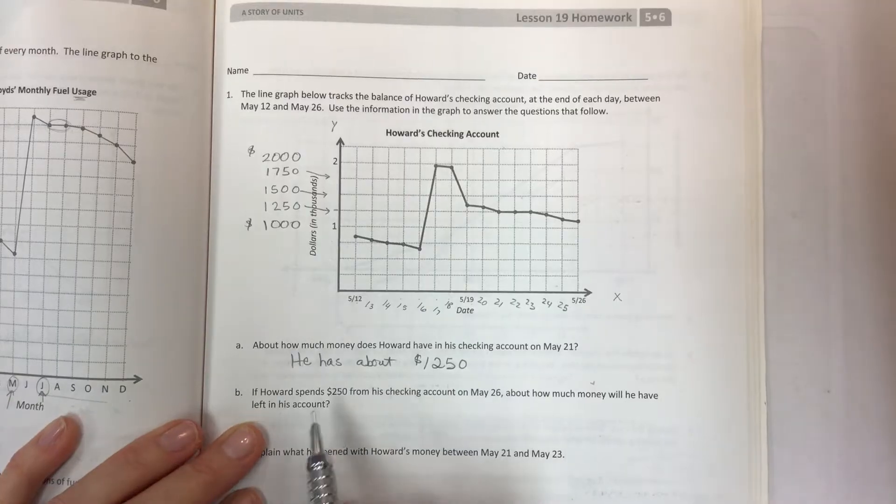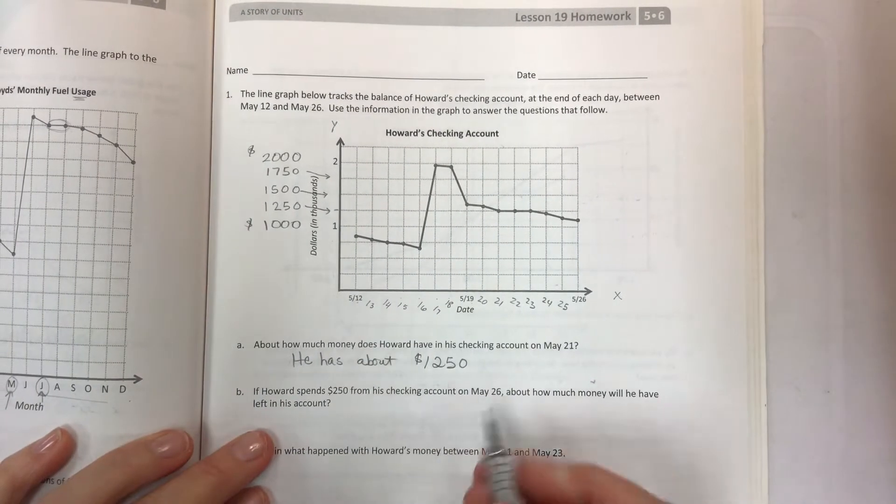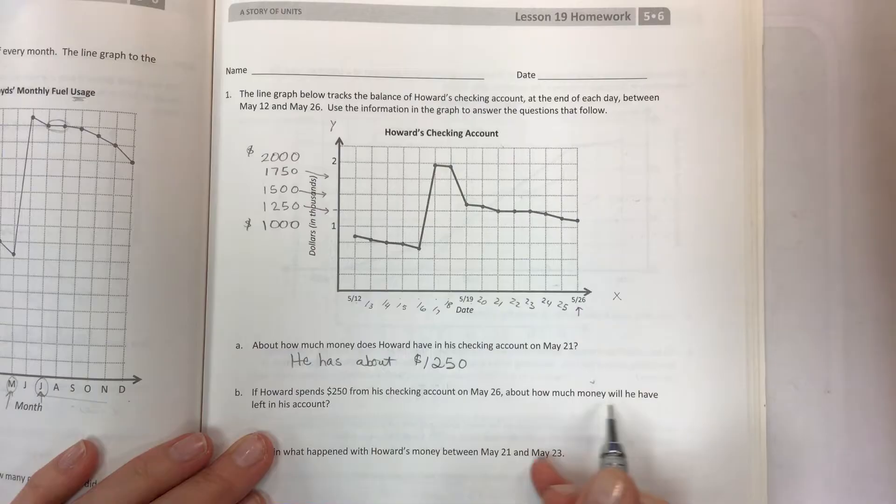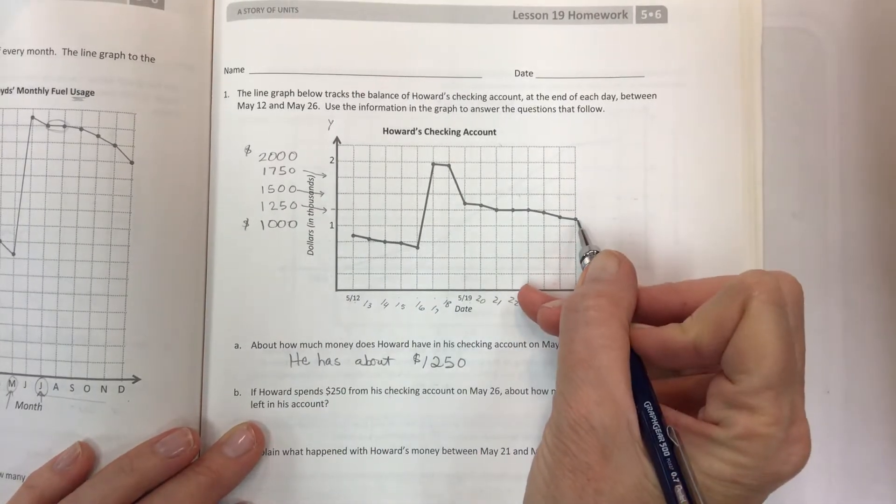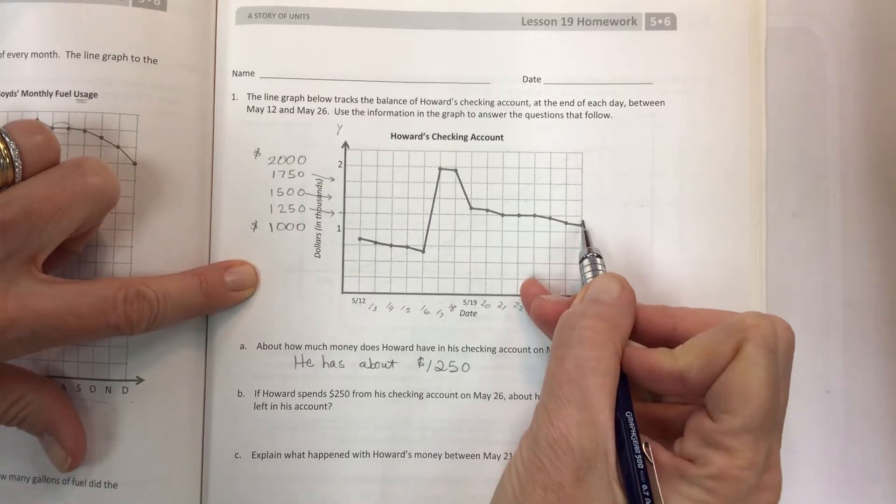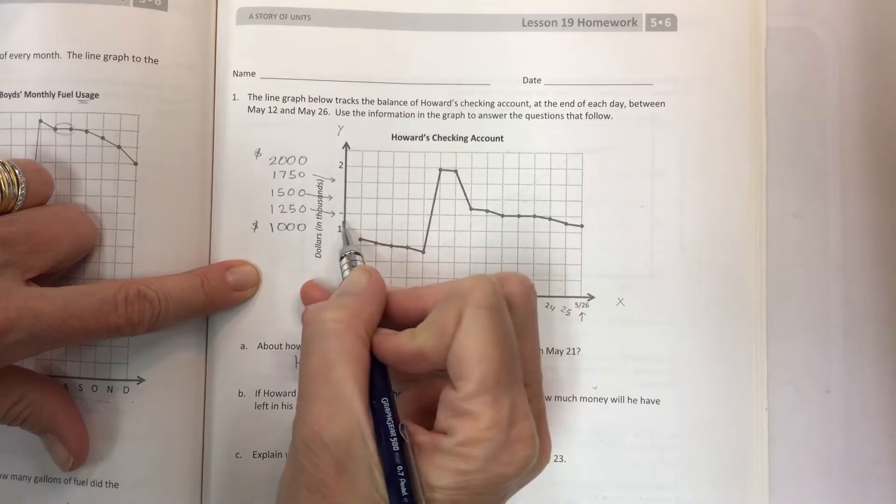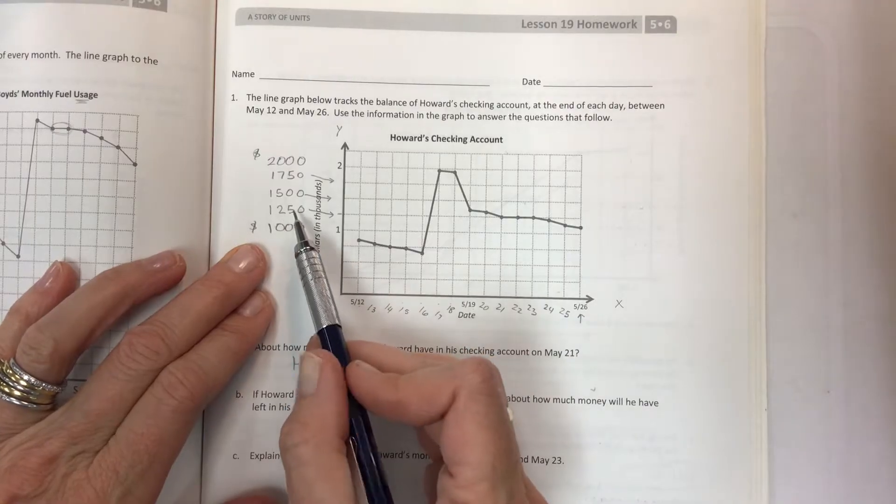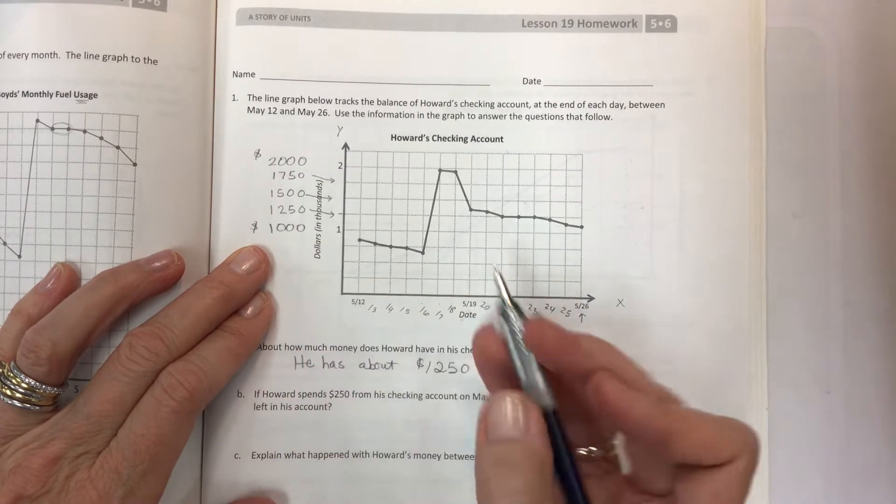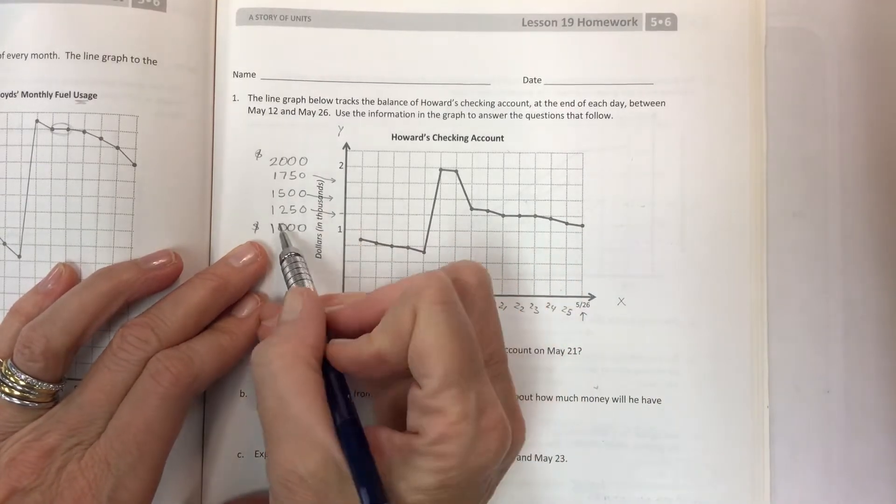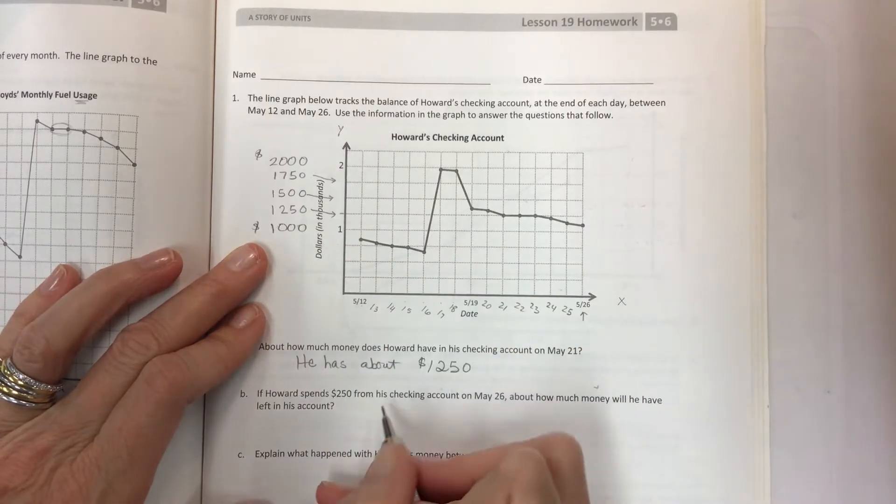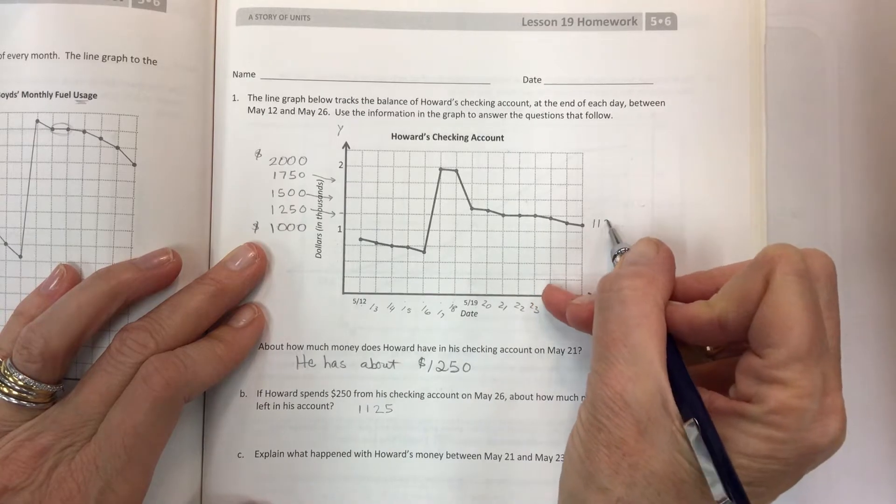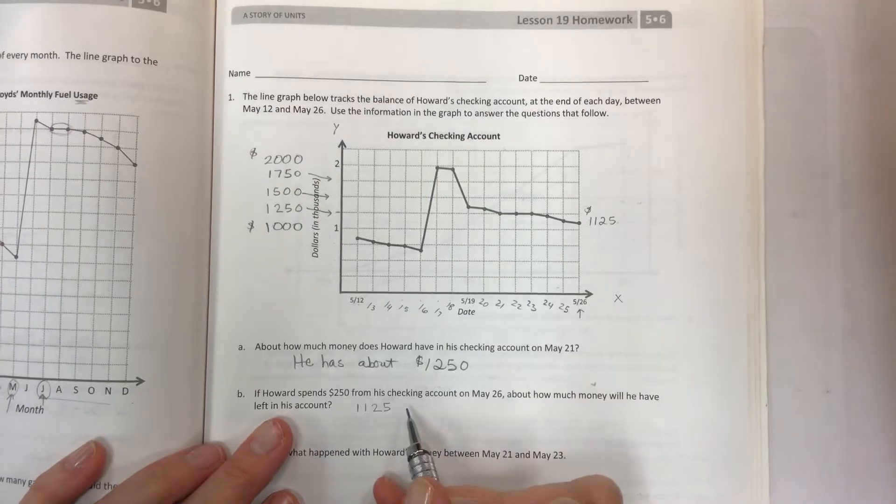Moving on to B. If Howard spends $250 from his checking account on May 26th, about how much money will he have left in his account? How much does he have here? That's important to know. This is roughly right in the middle of these two, so you go all the way back and you say it's about halfway between 1,000 and 1,250. So what's half of 250? That would be about 1,125. Now that's our starting point. That's about 1,125, and then he spends 250.